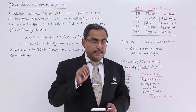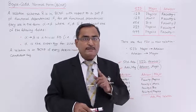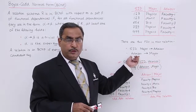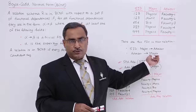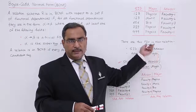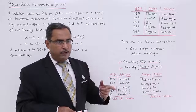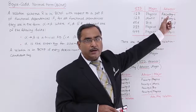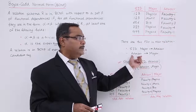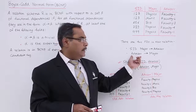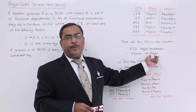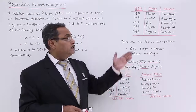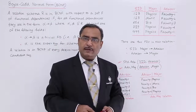How can we identify that this relation is not in BCNF? Whenever a non-prime attribute determines some of the prime attributes, we shall say that this relation is not in BCNF. Advisor is not underlined, so it is a non-prime attribute. Whenever a non-prime attribute determines one or more prime attributes, the relation is not in BCNF and will have anomalies.